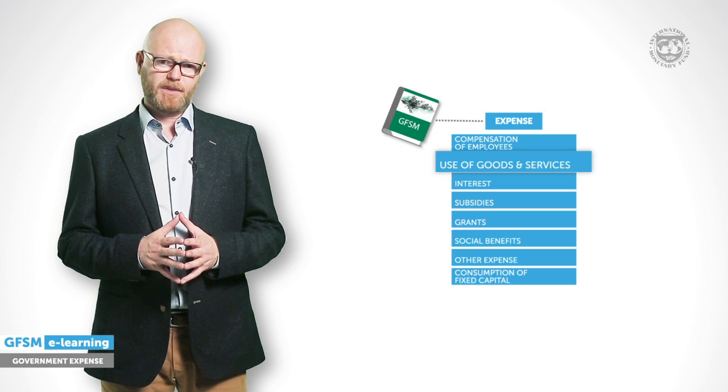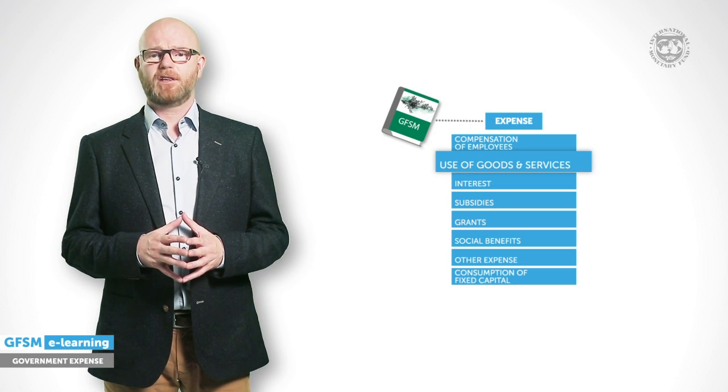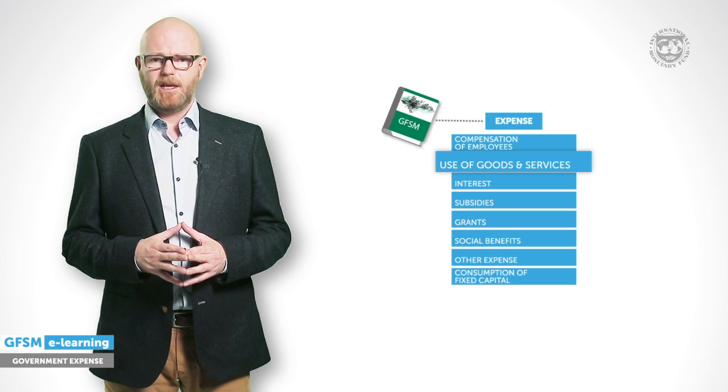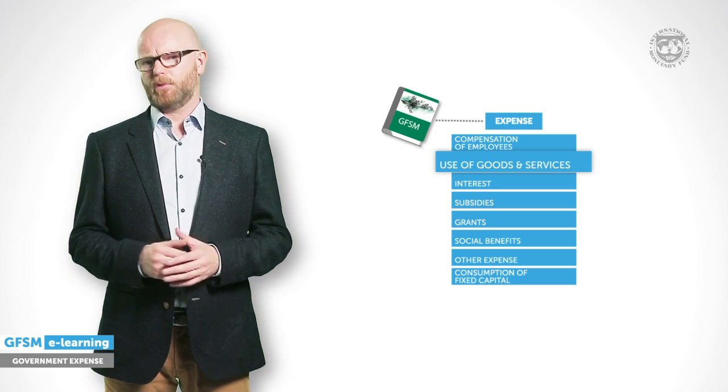Use of goods and services comprises all purchased services and goods that are needed to run the government — this may be renting of buildings, buying stationery, or paying for transport costs. Interest paid is an important measure for fiscal analysis, relating to the level of indebtedness, interest rates, and borrowing terms. In an accrual accounting system, interest is recorded on a continuous basis regardless of whether actual cash payments are made.